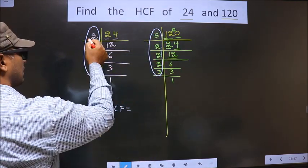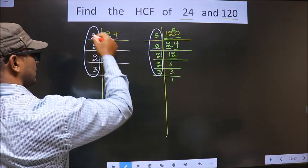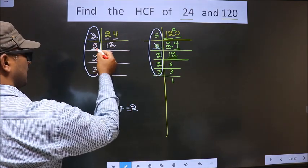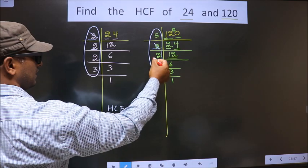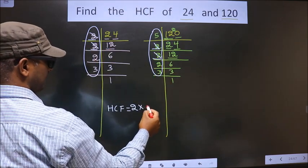Starting with the number 2. Do we have 2 here? Yes. So you cut 2 and write here. Next number is 2. Do we have 2 here? Yes. So you cut 2 and write here.